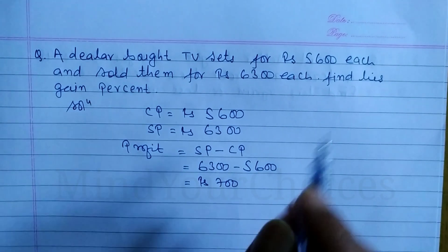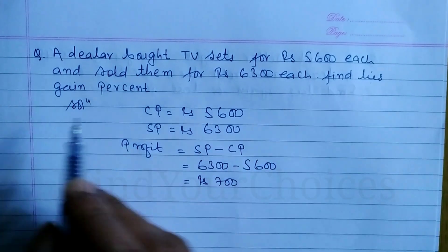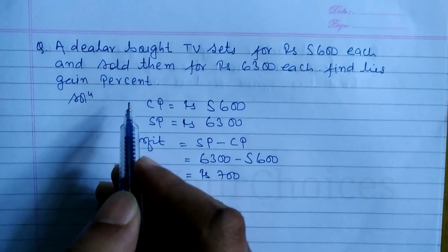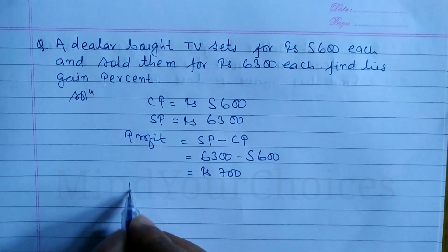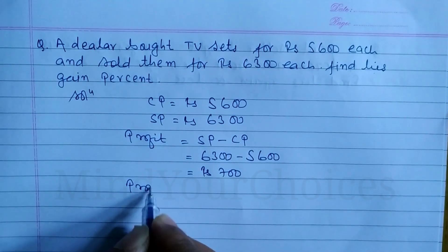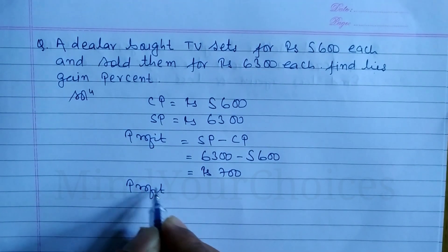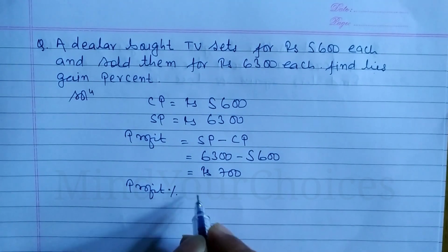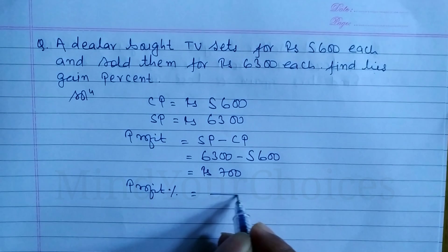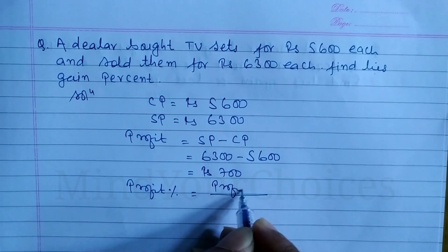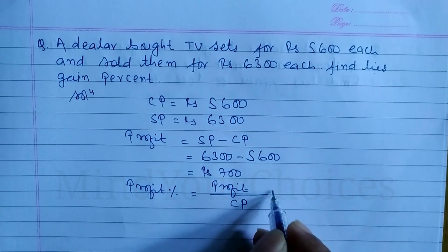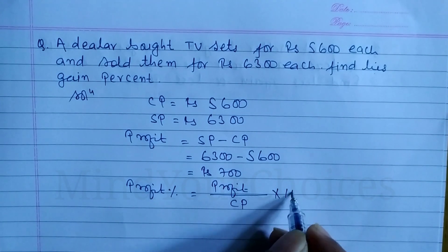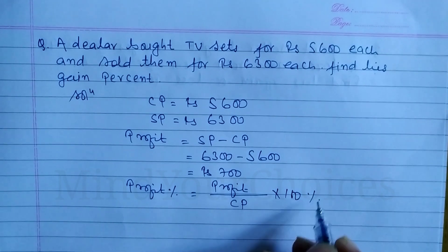What do we find out? Find his gain percent. Profit percent formula is: profit divided by CP, into 100 percent.